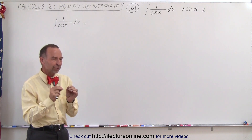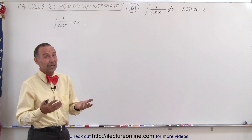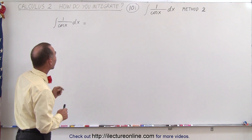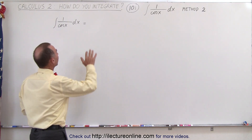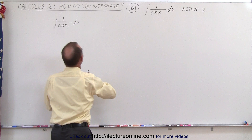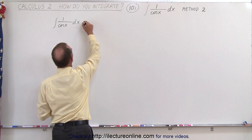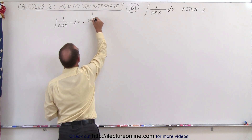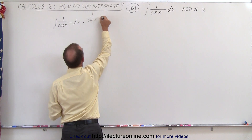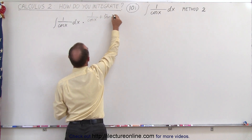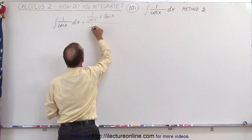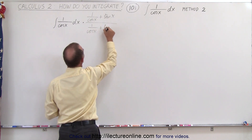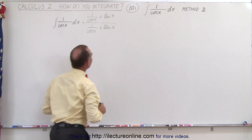When you see through it, it's actually virtually the same way, but without changing the 1 over cosine of x. We're going to take this integral and simply multiply it as follows: times 1 over the cosine of x plus the tangent of x in the numerator, and 1 over the cosine of x plus the tangent of x in the denominator.